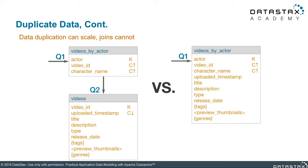Consider two situations. On the left we have a videos by actor table where we query off the actor, get the video ID for every video that actor's been in, and then have to do another query on a second table to pull all the video information — lots of queries, lots of network traffic, the user is waiting to click off your website. Compare this with the example on the right: we have actor, video ID, and character name, but we've also stored the video information along with the actor information in one table. So we can query off the actor and get all video information for that actor in a single partition.